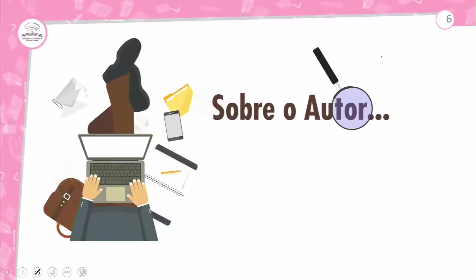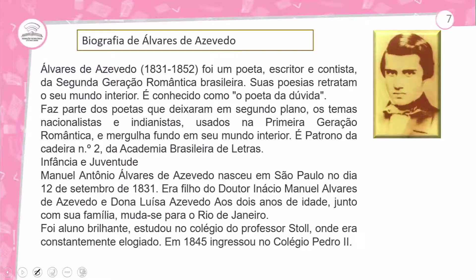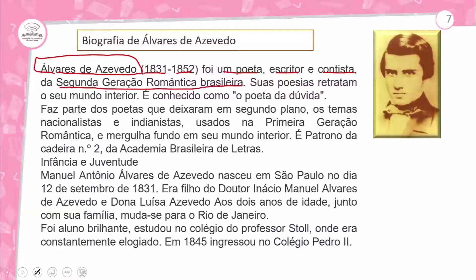Vamos um momento sobre o autor. Biografia de Álvares de Azevedo — não está completa, é um trecho para te ajudar quando for produzir uma biografia, porque você tem uma atividade no Trabalhando o Gênero. Álvares de Azevedo nasceu em 1831 e nos deixou em 1852. Ele foi um poeta, escritor, contista da segunda geração romântica brasileira. Vou trocar a cor para você ficar antenado neste autor maravilhoso.